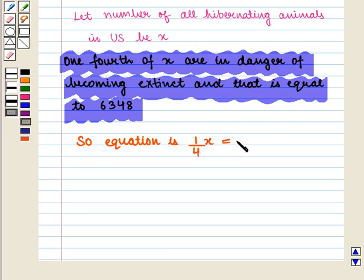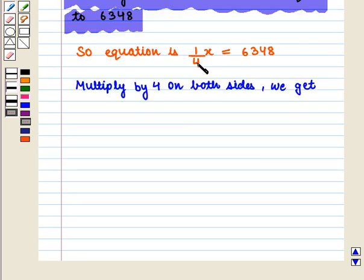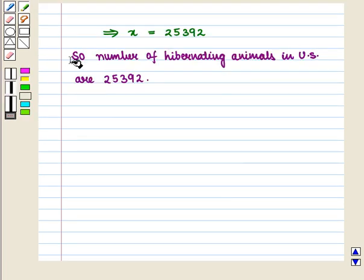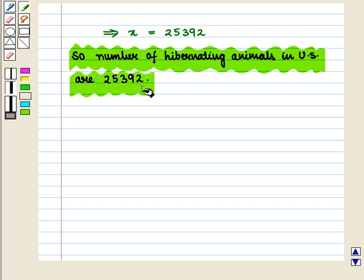To find the value of x we multiply by 4 on both sides and we get 1/4 x × 4 = 6348 × 4. This implies that x = 25392. So number of hibernating animals in US are 25392.